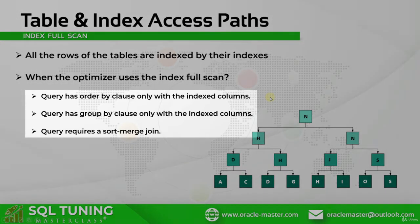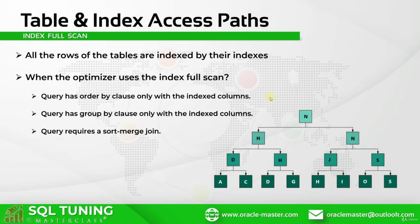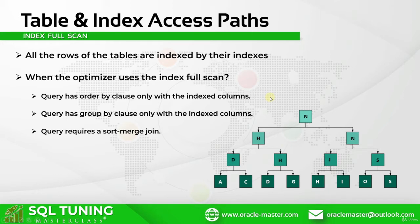Alright, so in all these conditions, the optimizer performs an index full scan to improve performance. But in ORDER BY and sort merge join conditions, the order of the index columns must match with the indexing order. For example, if you created your index on employee ID and first name sequentially, if you write first name first, it may not perform an index full scan but will perform a full table scan, or maybe it will perform an unnecessary sort operation with the index full scan. But in a GROUP BY clause, there is no need for that — the order of the columns in the GROUP BY clause is not so important.